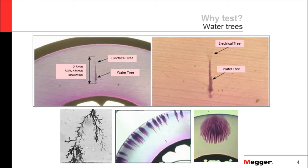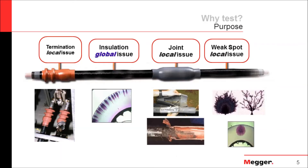You can have hundreds of these water trees in your cable, and only one of them needs to break through to create a fault. Because they can exist anywhere along the cable, this is considered a global issue. There are also more local issues — like a bad termination, a bad joint, or extra degradation in just a small section of your cable. It could be a water tree issue or corrosion on the shield. These are all considered local type issues.